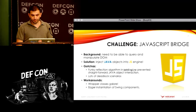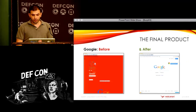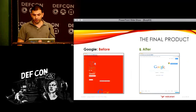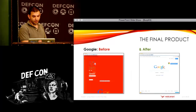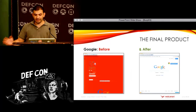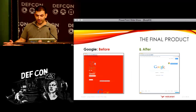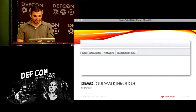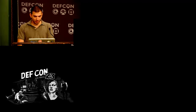So this is the final product — the before and after. On the left you see Lobo: a very ugly Google page. And on the right you see Google in all its glory. So here, let's show you what BurpKit looks like.